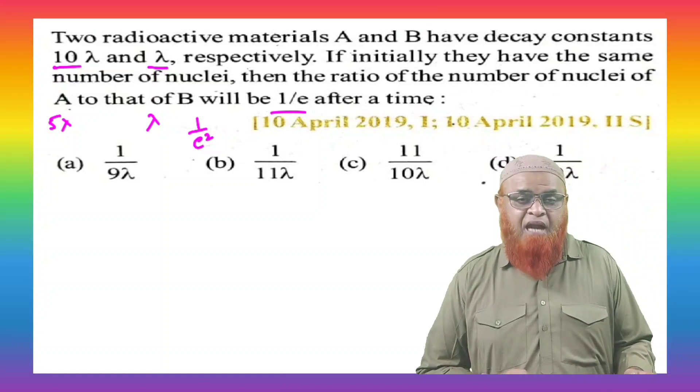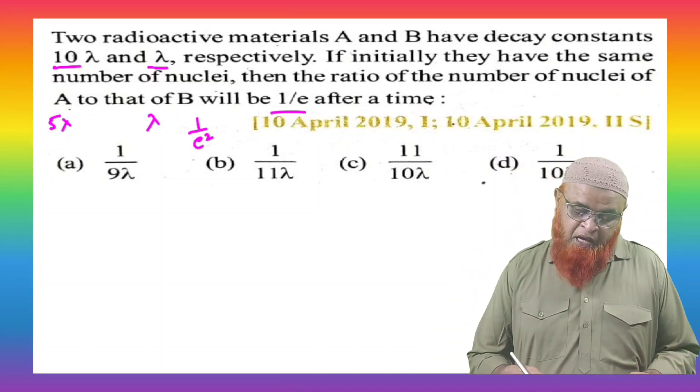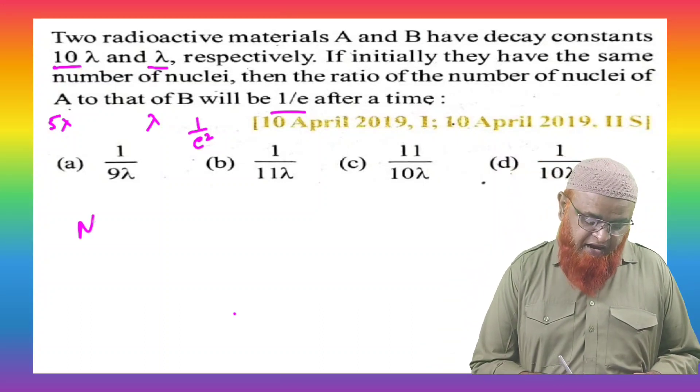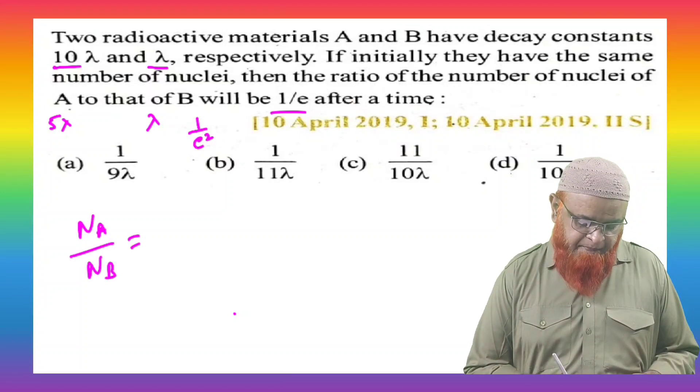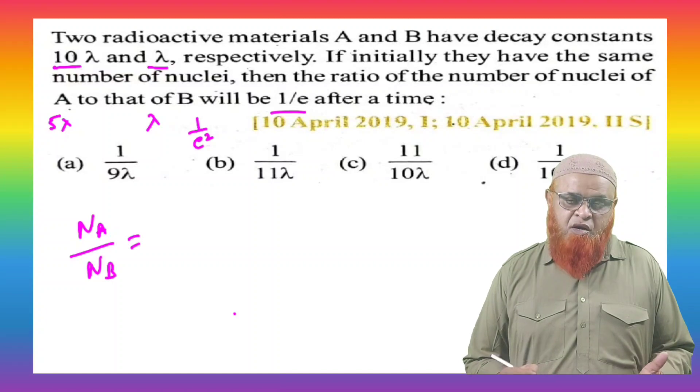So how can you solve this type of problem? I will tell you one small shortcut. To find out the ratio of A and B, it can be written as NA by NB. You have to find out this ratio.